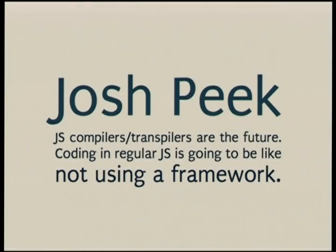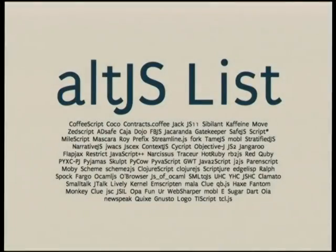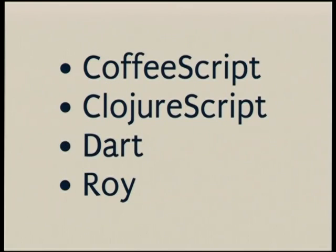So Josh Peake is a GitHub employee, and he went to a conference recently. I think it was JSConf in Europe. He said that JS compilers, like languages that compile to JavaScript, are the future. Using regular JavaScript is going to be like not using a framework. So imagine not using jQuery for most of our stuff. But that's what it's going to be. There's a heap of options. I maintain a list of them on alt.js.org. And there's a lot, but I'm going to talk about four of them: CoffeeScript, ClojureScript, Dart, and probably one that you haven't heard of which is Roy.